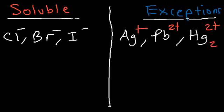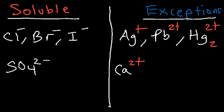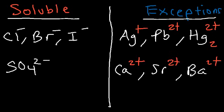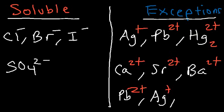Next let's move on to the sulfates. The sulfates are generally soluble, except with calcium 2+, strontium 2+, barium 2+, lead 2+, silver, and the mercury(I) cation. So sulfates are generally soluble, except when bonded to one of those ions.